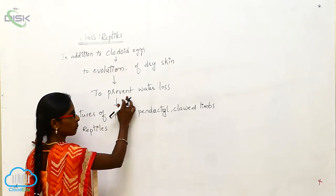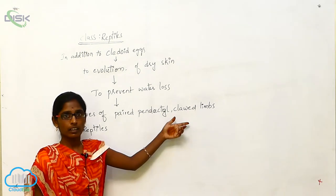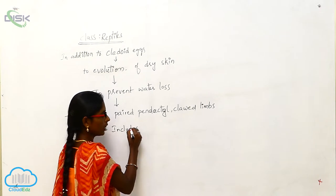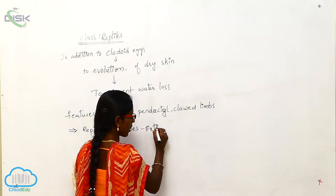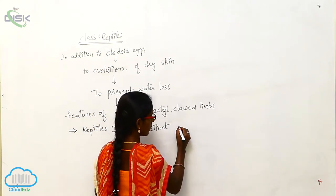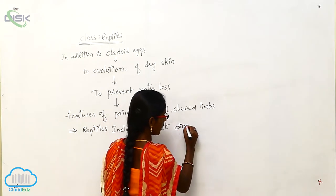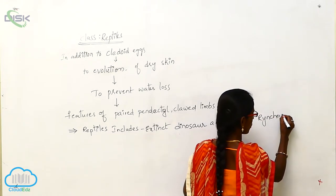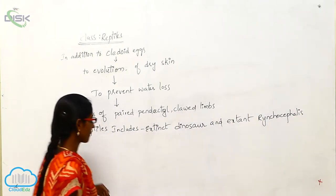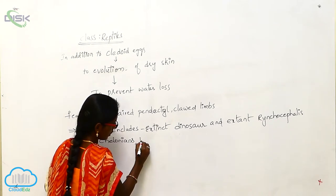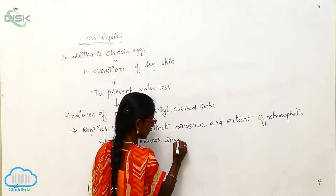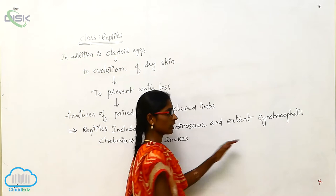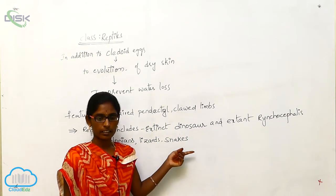The cleidoic eggs to prevent water loss, and features of paired pentadactyl and clawed limbs are present in the reptiles. Reptiles include the extant class of extant dinosaurs, extant rhynchocephalia, crocodilians, lizards and snakes. These are included in the reptiles.